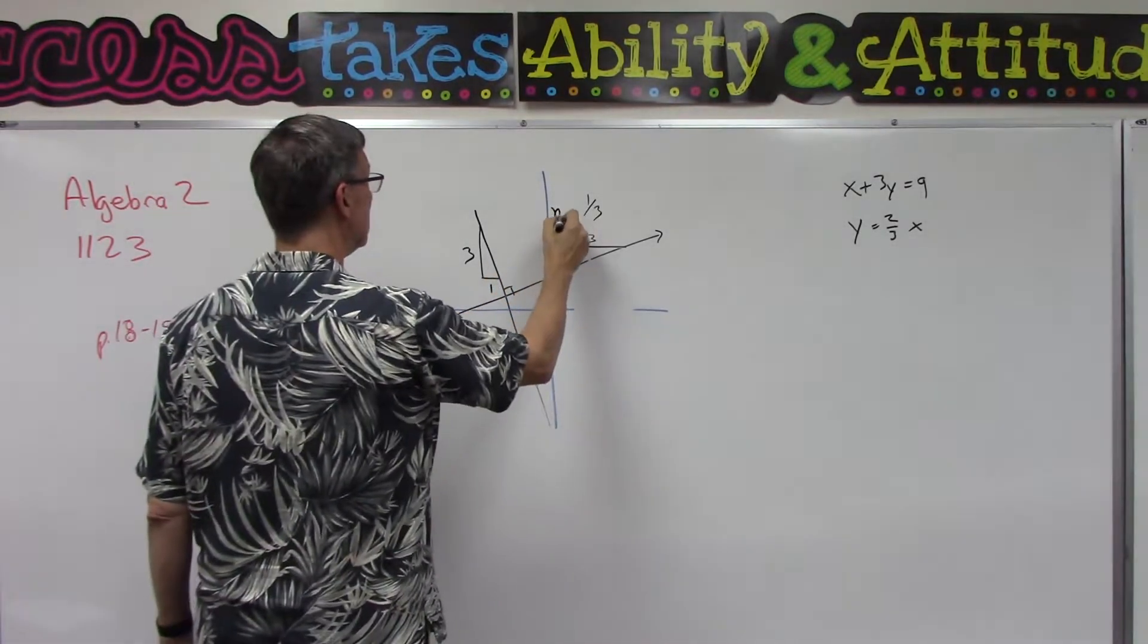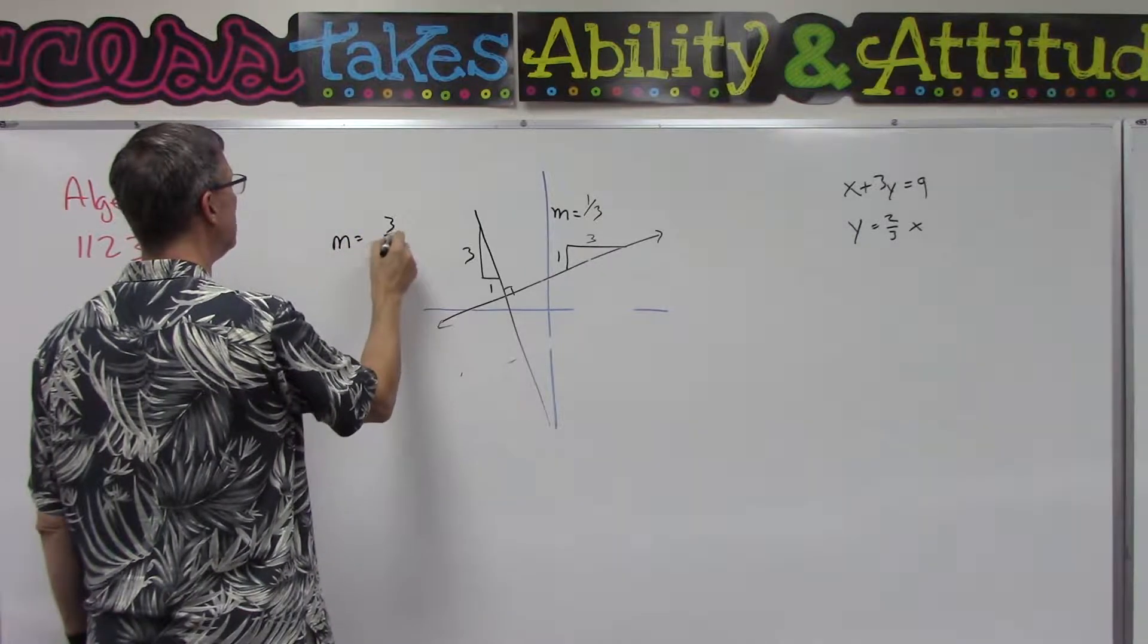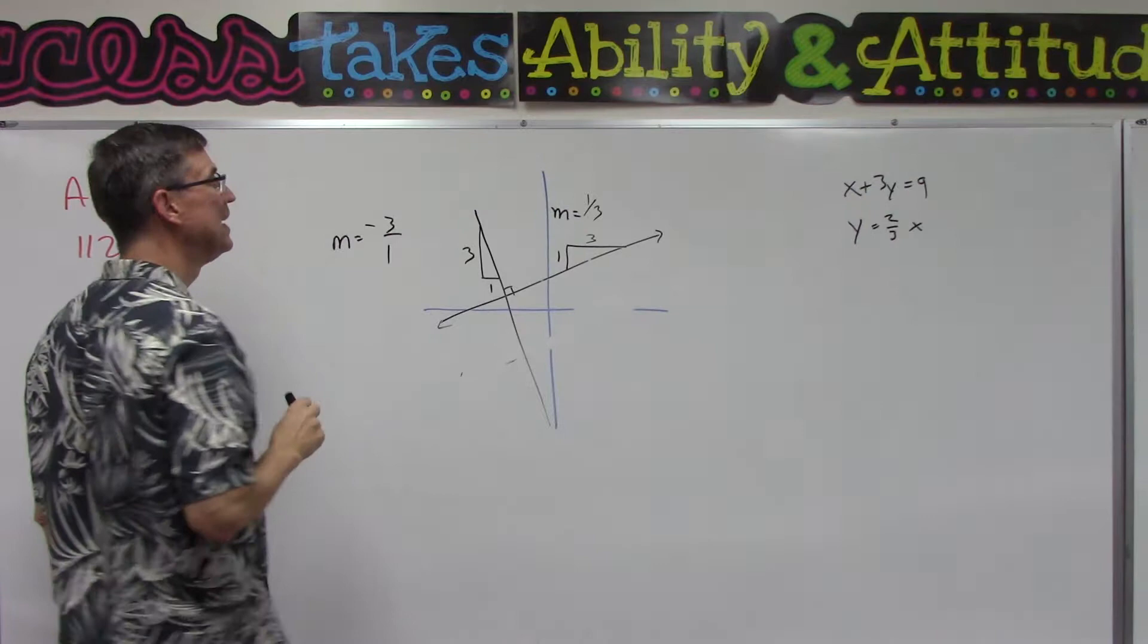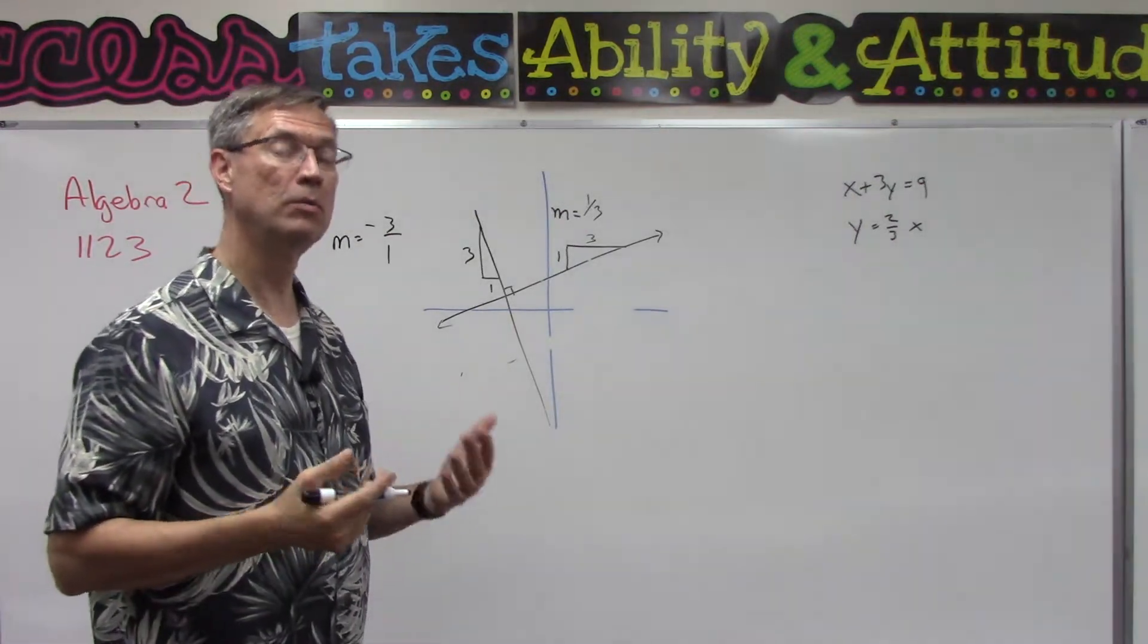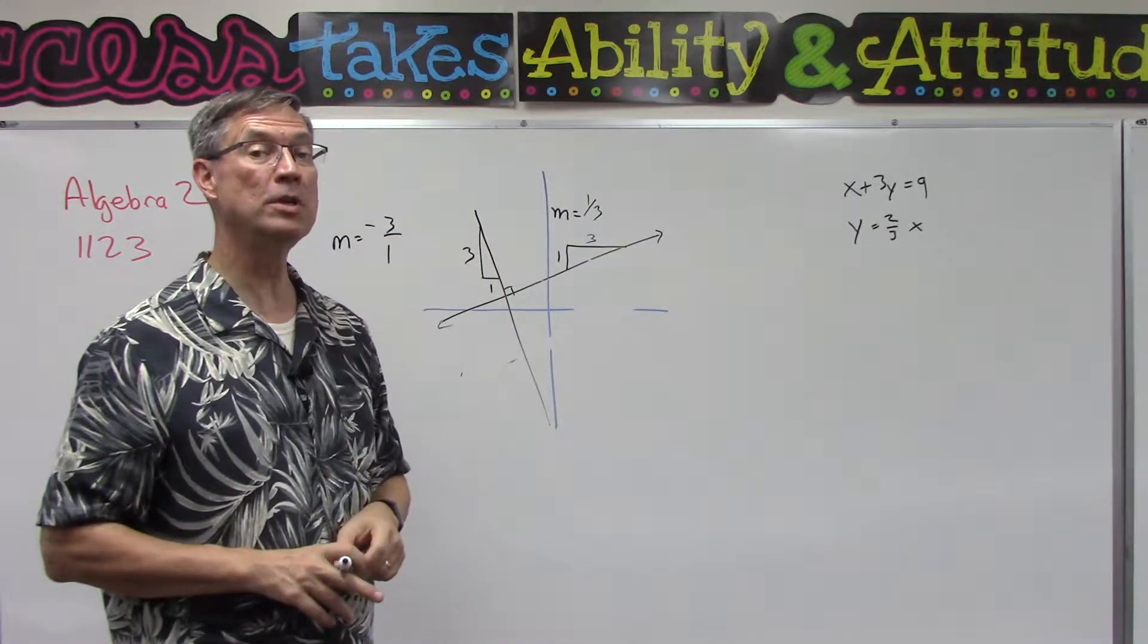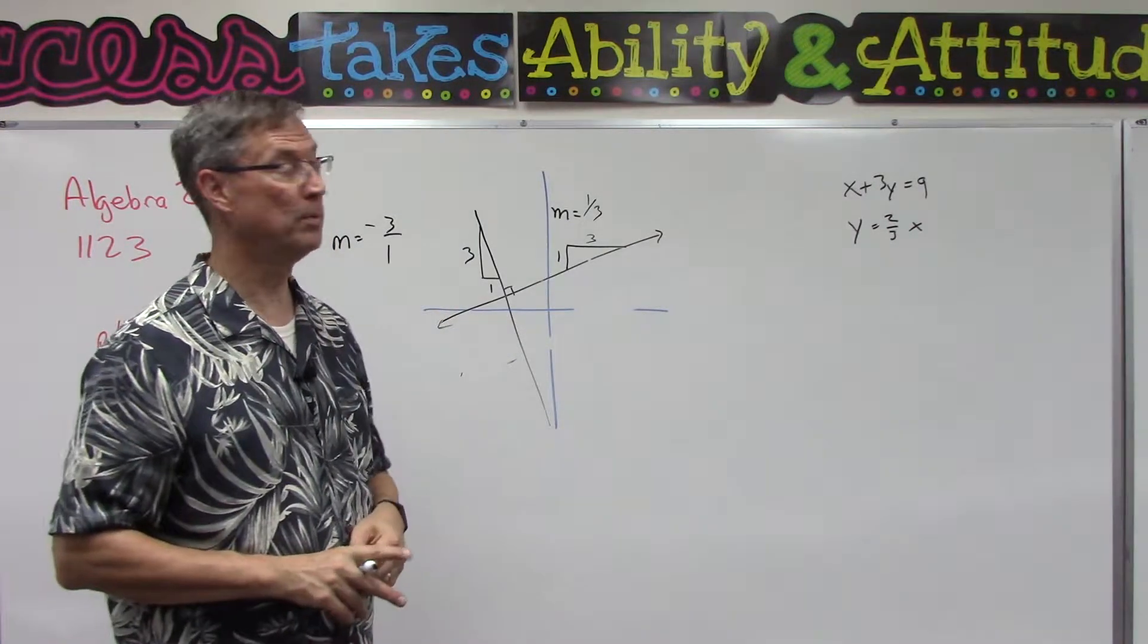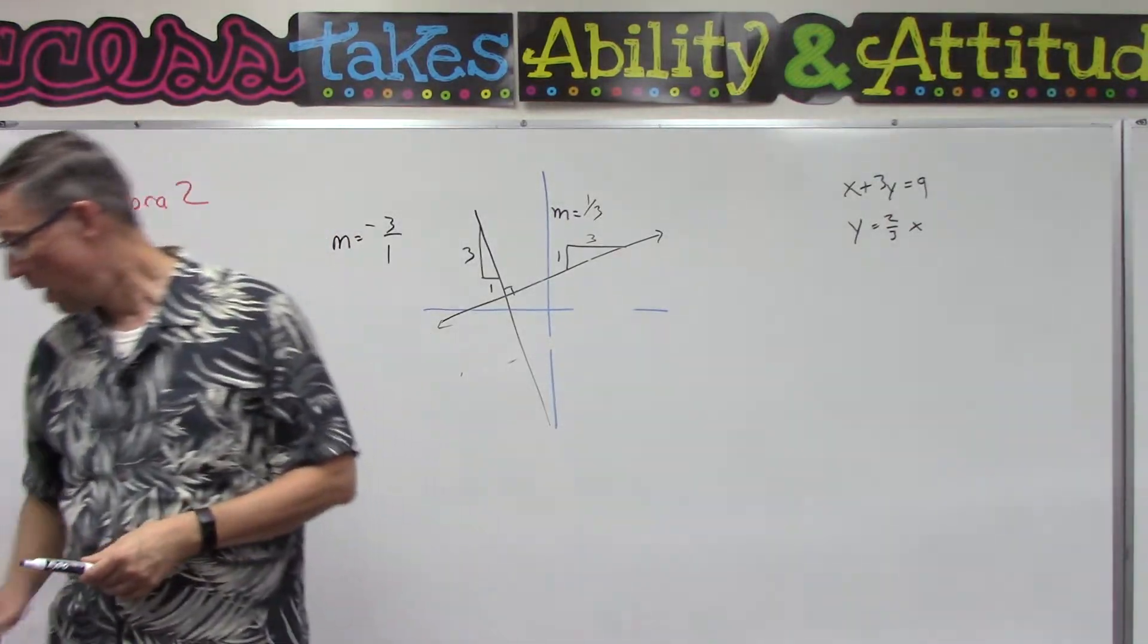Guess what, the rise over the run is going to be 3 over 1. So if this one is 1 over 3, this one will be 3 over 1, and it's actually going down so it's negative 3 over 1. So we call it the opposite reciprocal. If you take this slope, flip it upside down and change the sign, and you have this, then we would say those two lines are perpendicular.